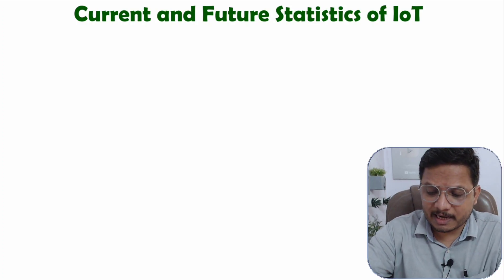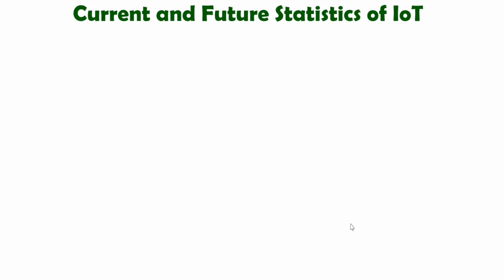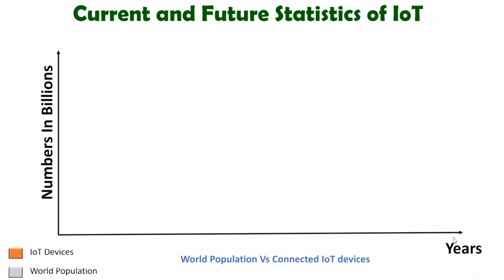Let me show you that graph step by step. On the horizontal axis, I'll explain years, and on the vertical axis, I'll show the number of IoT devices in terms of billions. I'll explain the number of IoT devices with respect to the world's population. In 2021, there were around 11.3 billion IoT devices with respect to a world's population of 7.9 billion — so almost 1.3 IoT devices per single human being.